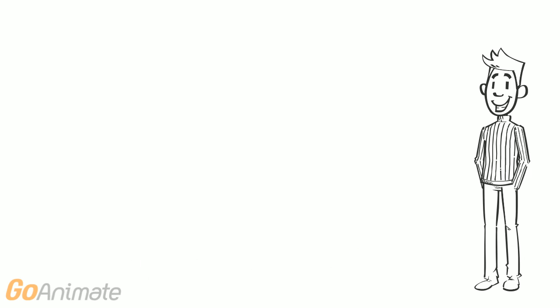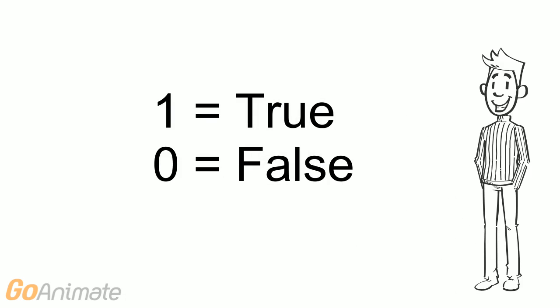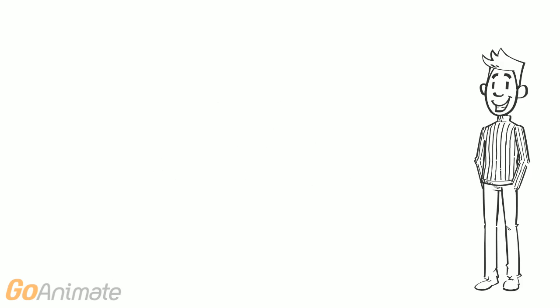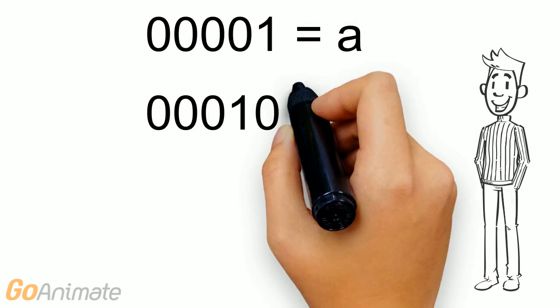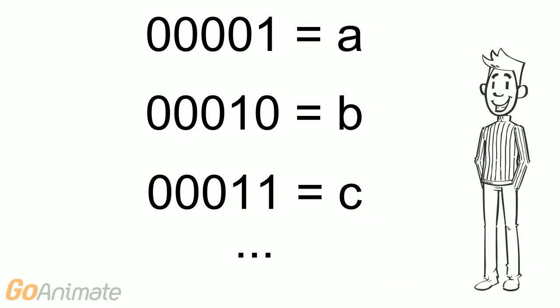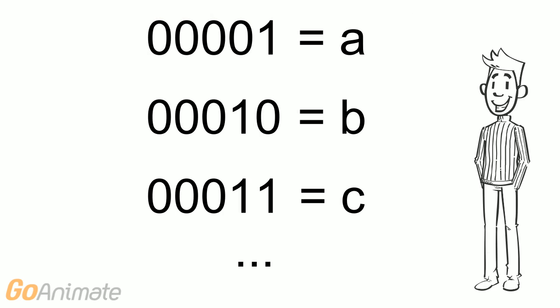Individual bits can only encode data that has two possible values, such as true or false. By grouping bits, however, we can encode exponentially more complex data. For example, with a group of only 5 bits, we can uniquely encode every lowercase letter in our alphabet.